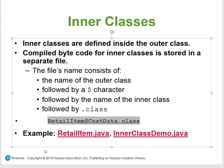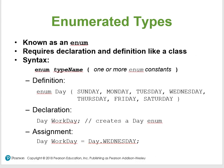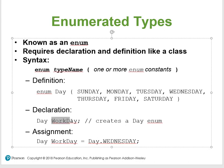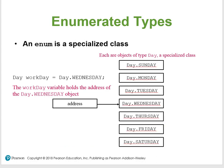Enum data types are very important — they are user-defined data type definitions, equivalent to structures. An enum requires a declaration like a class. The syntax is: enum TypeName { ONE_OR_MORE_ENUM_CONSTANTS }. For example, 'enum Day' with the seven days of the week. You then use it as: Day workDay = Day.WEDNESDAY. Each enum constant is a specialized object with a memory address, and you use dot syntax to access them.